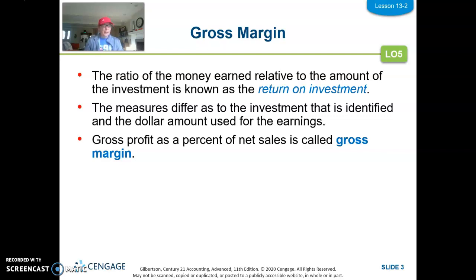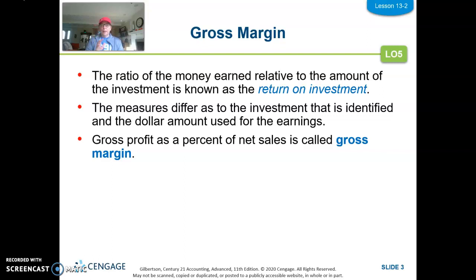The first one we're going to talk about is gross margin. I'd use my Blackline Masters for notes on all of these. Gross margin is the ratio between the money earned to the investment, and that's called return on investment — ROI. That's a really generic term; there are other ROI calculations depending on the type of investment, but the one we're looking at here is gross margin.